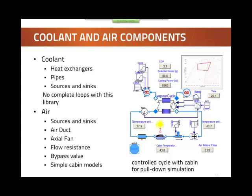You can take the entire refrigeration process and include it in a larger system — extending the air side, for example, with airflow going through the evaporator and models for the car cabin added. The library contains a few components on the air side: a basic cabin model, ducts, a fan, and flow resistances. The same is true for coolant — you have heat exchangers with refrigerant on one side and coolant on the other side, so you could combine the air conditioning part with part of the coolant loop in a vehicle.